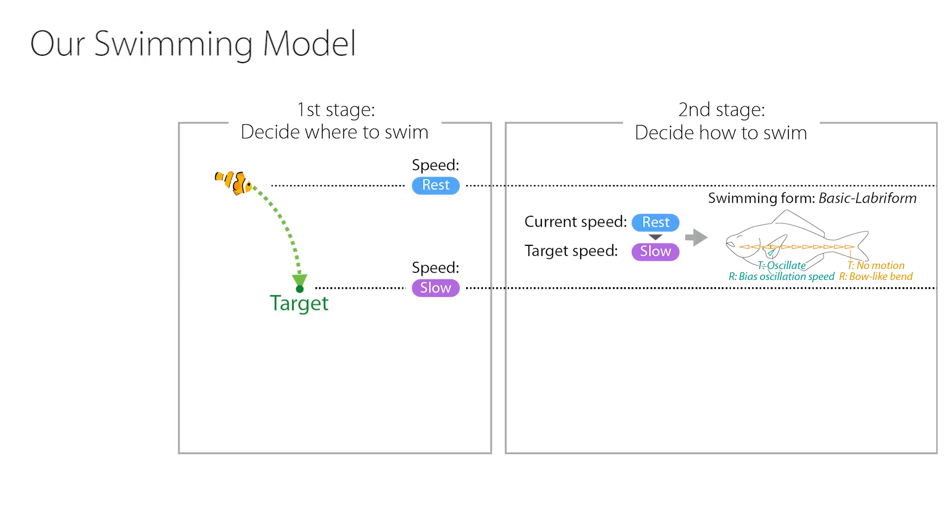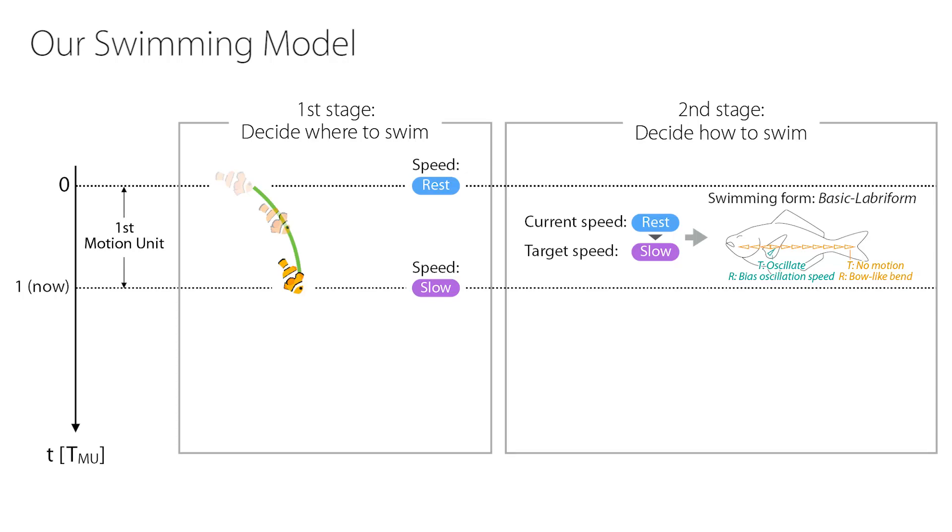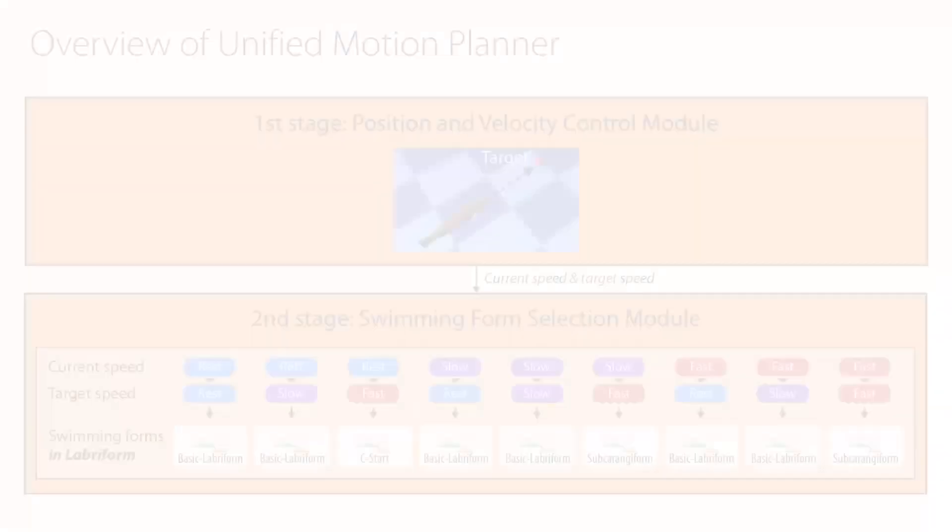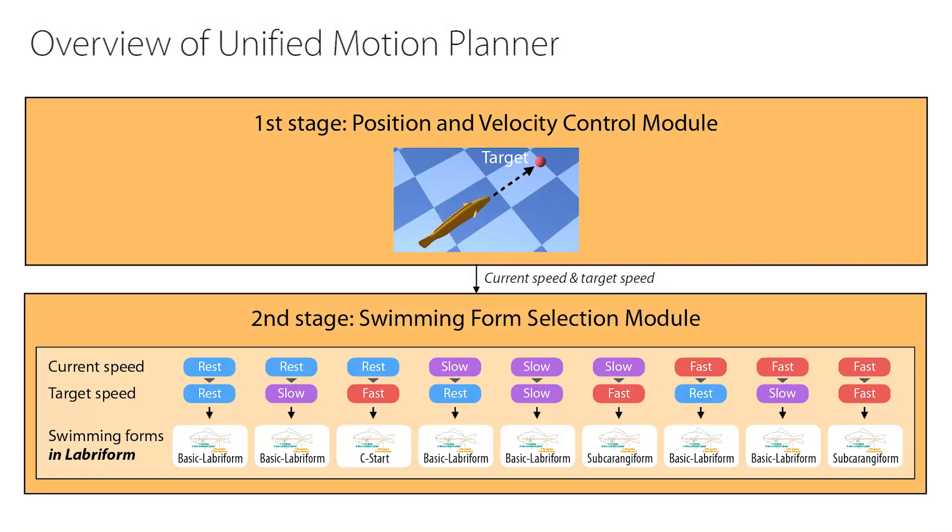The movement of the fish skeleton is defined for every swimming form. The virtual fish will take a certain length of time to swim towards the target. This unit of time taken to swim is called a motion unit. In the following motion unit, it decides the target and the swimming form before swimming. Our unified motion planner executes this two-stage decision-making process.